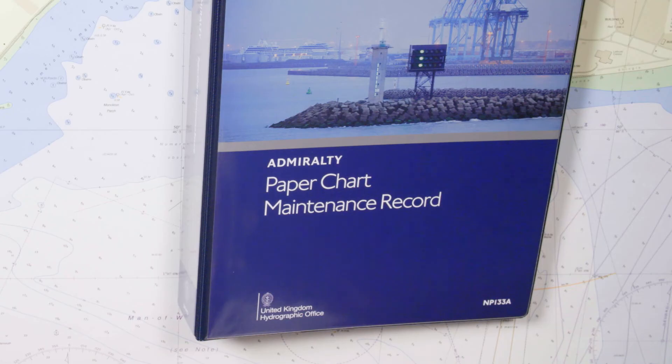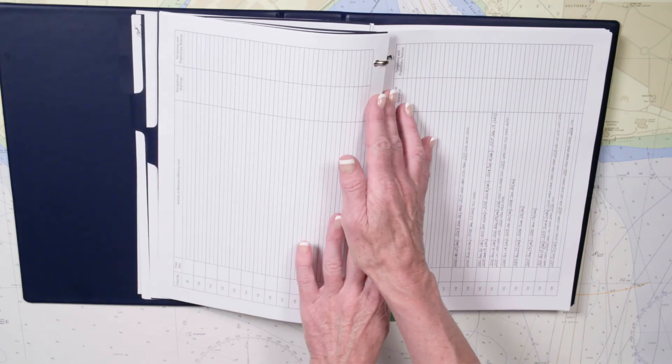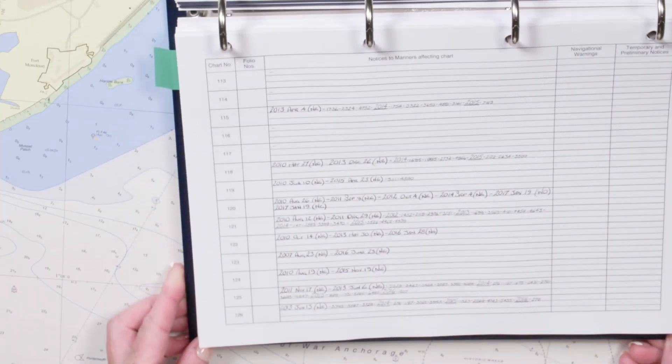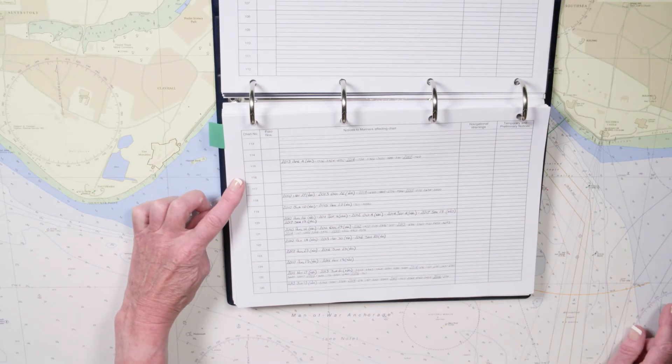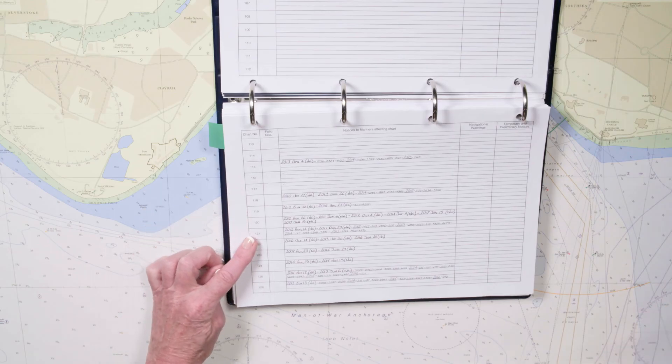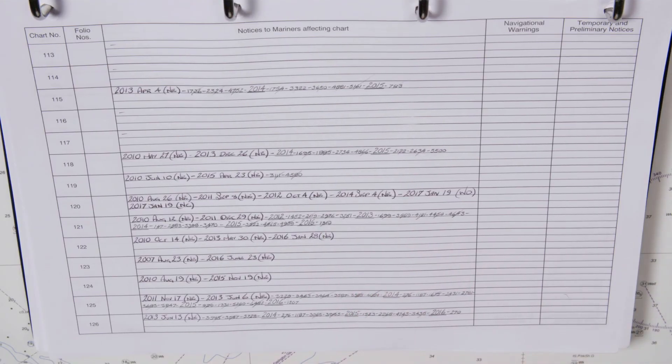Your final piece of equipment is a publication. The NP133A is the paper chart maintenance record, listing every chart numerically. Use the publication to record updates by their NM number against any chart affected. It's extremely important to keep an up-to-date record of all updates. Otherwise, you can very easily lose track and are more likely to miss applying NMs.